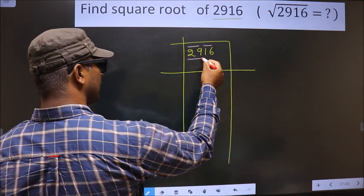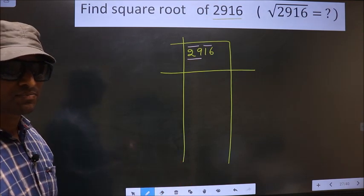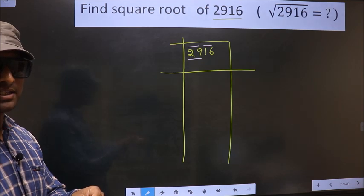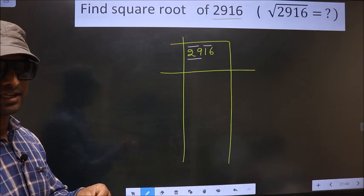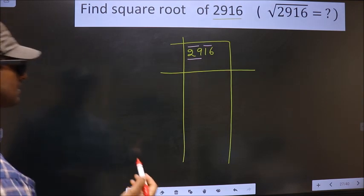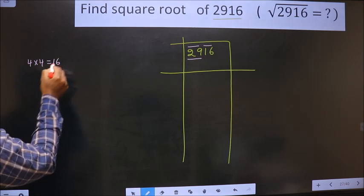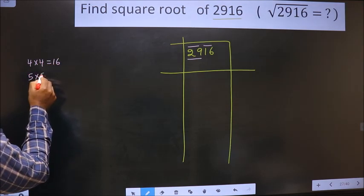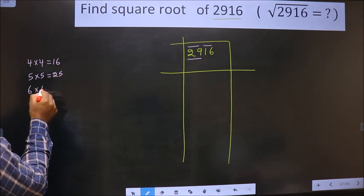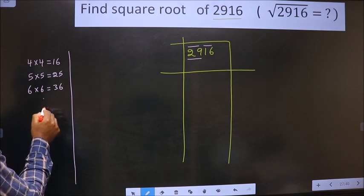Now here we have 29. 29 is not a perfect square. So we should check between which two perfect square numbers 29 lies. The perfect square numbers are: 4×4=16, 5×5=25, 6×6=36, and so on.